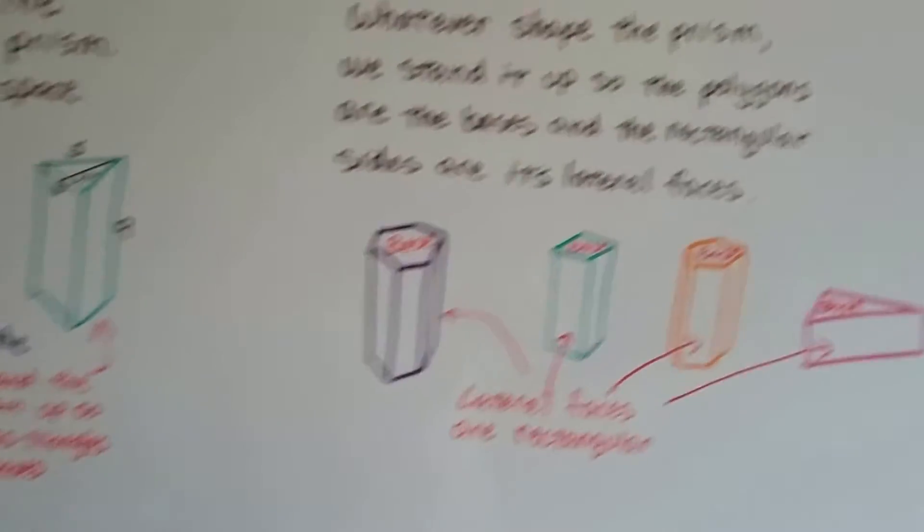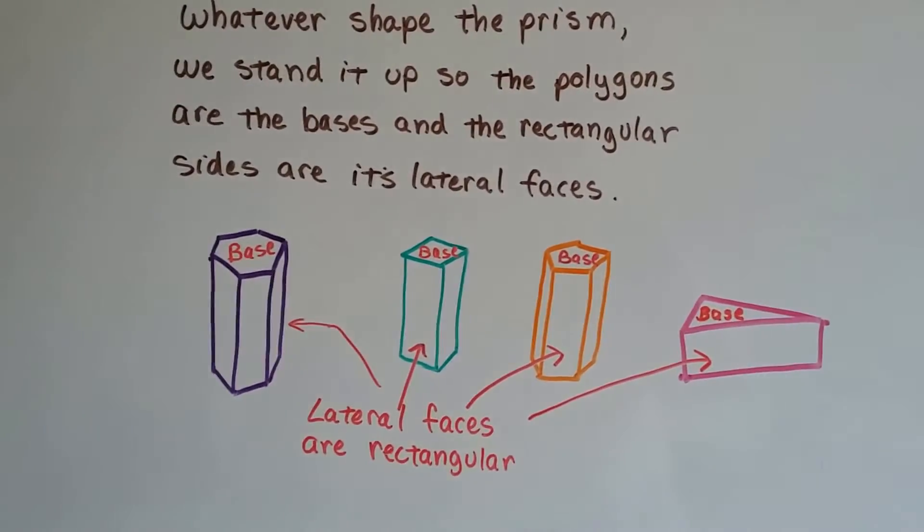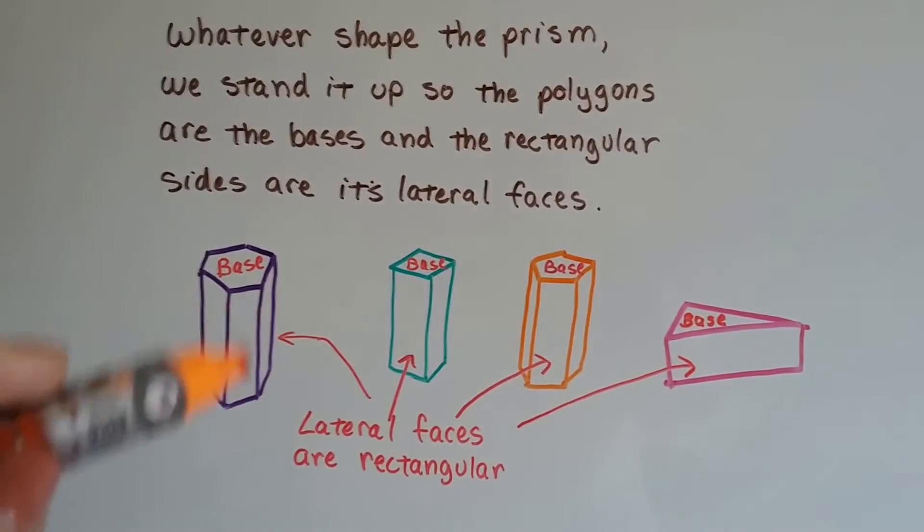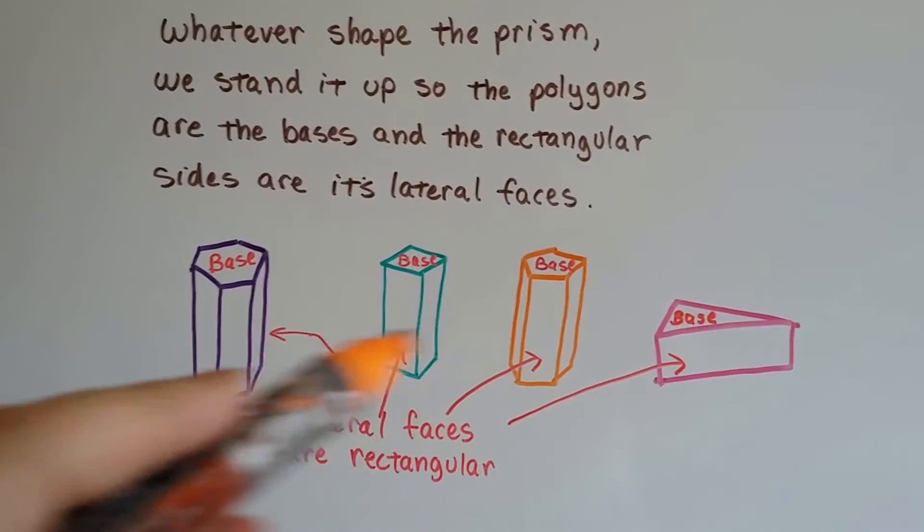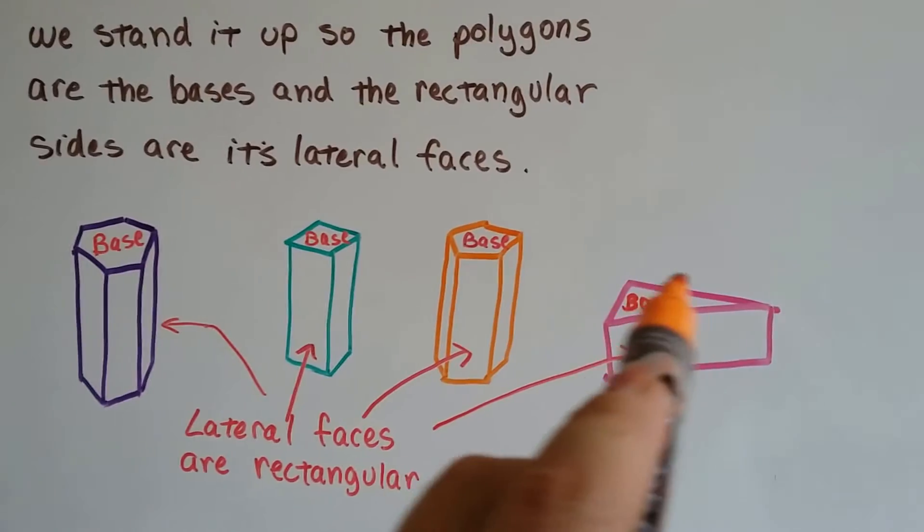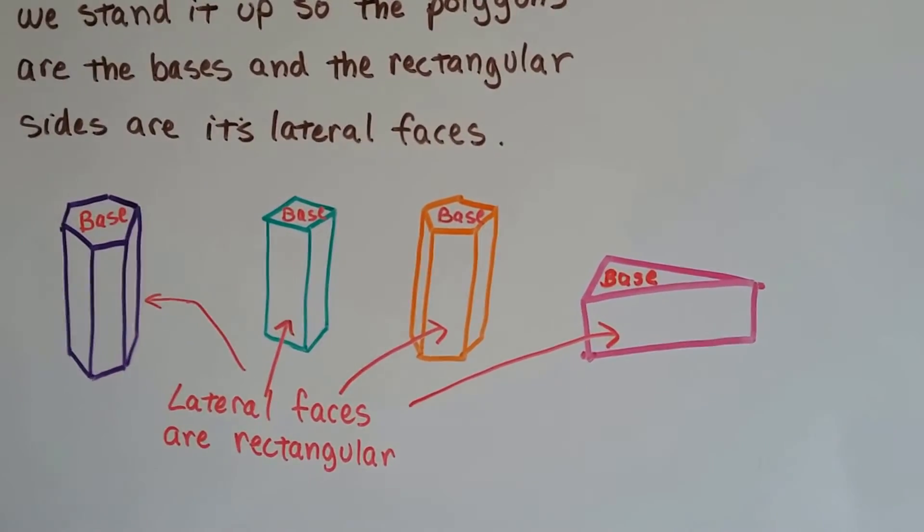So here's what you need to remember. Whatever the shape of the prism, we stand it up so the polygons are the bases, the top and the bottom. And the rectangular sides are its lateral faces. So even this one that looks like a wedge of cheese, as long as the triangle is on the top and the bottom, then we know it's okay.